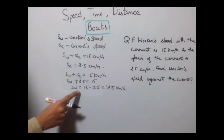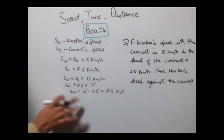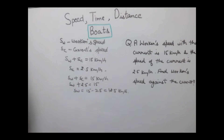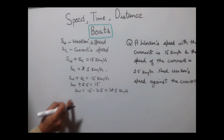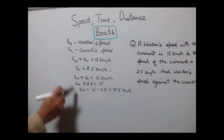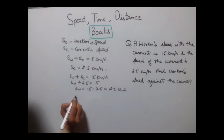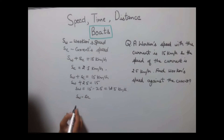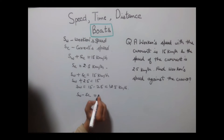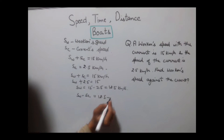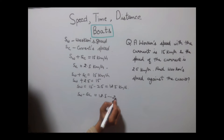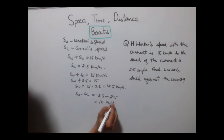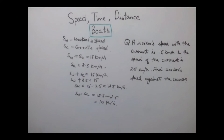This is the worker's speed in still water, without the current. Now we need to find the worker's speed against the current. For this, we subtract the speed of current from the worker's speed: SW minus SC equals 12.5 minus 2.5, which gives us 10 km per hour as the answer.